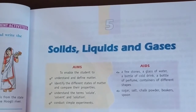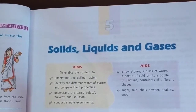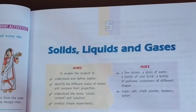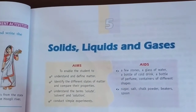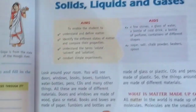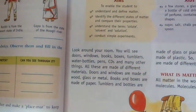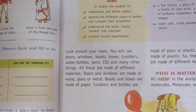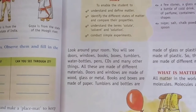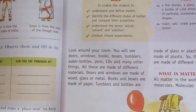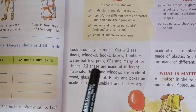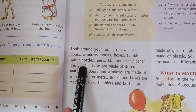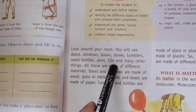Look around you. You will see a lot of things like windows, books, boxes, tumblers, water bottles, pens, and CDs. All the things around us are made of different materials.